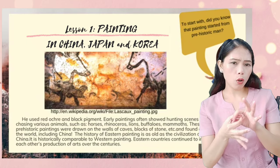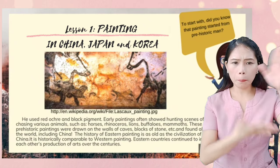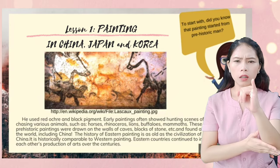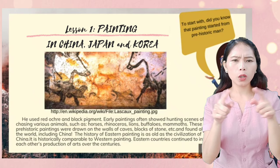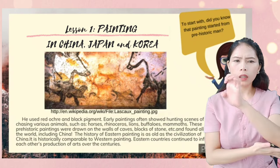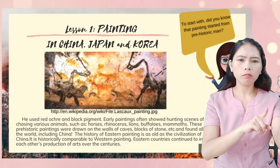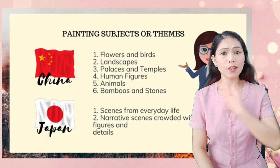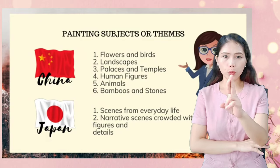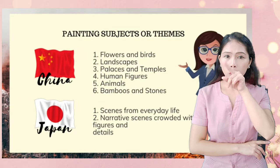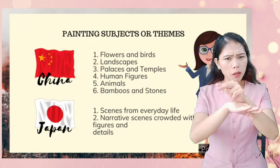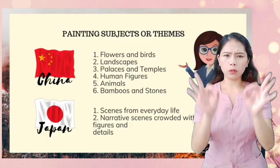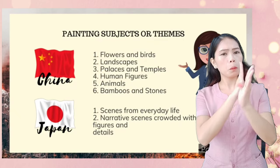The history of eastern painting is as old as the civilization of the people in China, and is historically comparable to western painting. Eastern countries continue to influence each other's production of arts over the centuries. The painting subjects or themes include flowers and birds, landscape, palaces and temples, human figures, animals, bamboos, and stone.